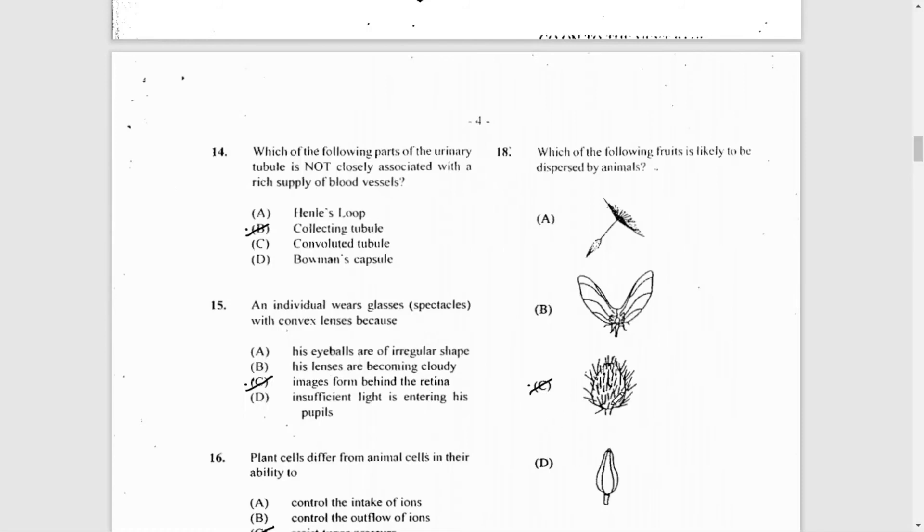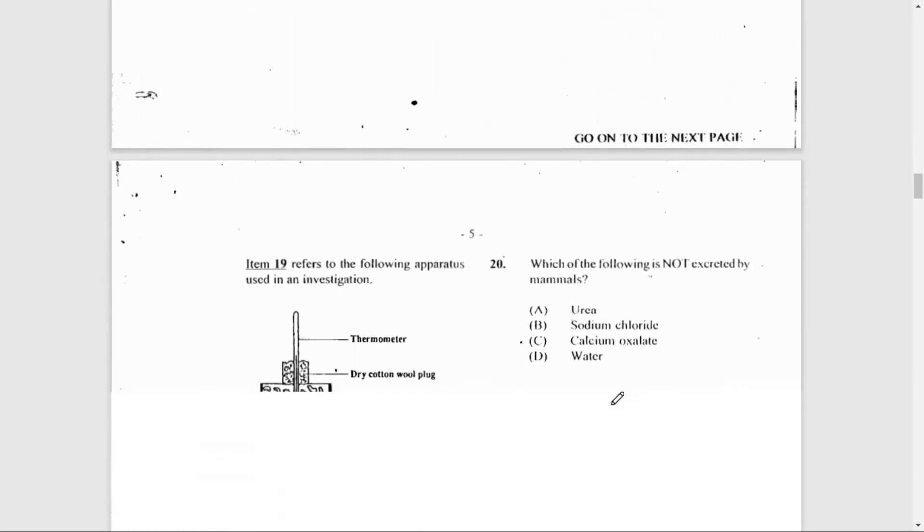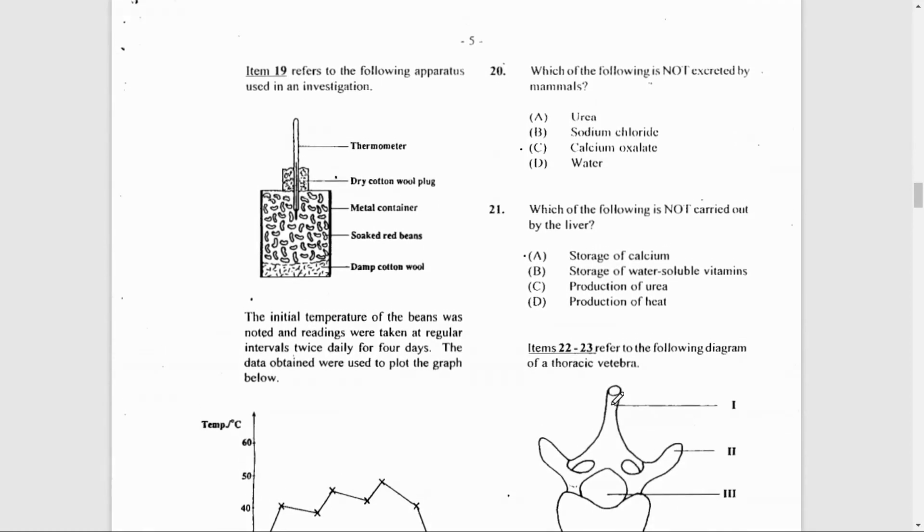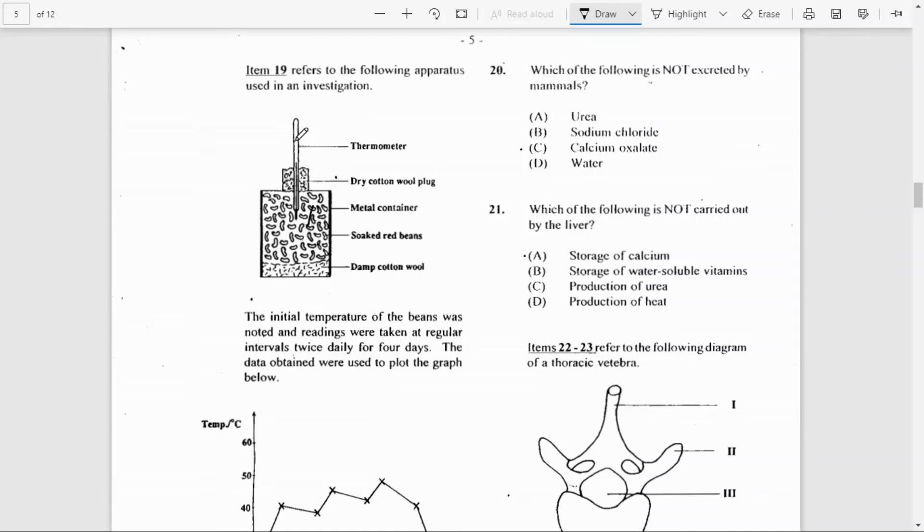Number 19, the penultimate question, refers to the following apparatus used in an investigation. You have a thermometer, dry cotton wool here, metal container, soaked red beans, damp cotton wool. This is an apparatus for respiration. The aim for this experiment could be to determine if heat is produced during respiration—that's why you're using the thermometer to measure the increase or change in temperature.